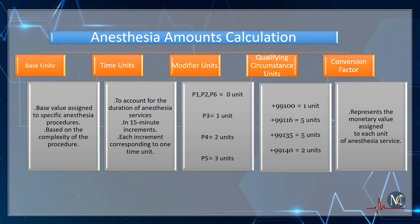The next unit is the time unit. Time units are used to calculate for the duration of anesthesia services provided beyond the base value. Anesthesia services are billed in 15-minute increments, with each increment corresponding to one time unit. The total duration of anesthesia services is divided by 15 minutes to determine the number of time units billable for the service.